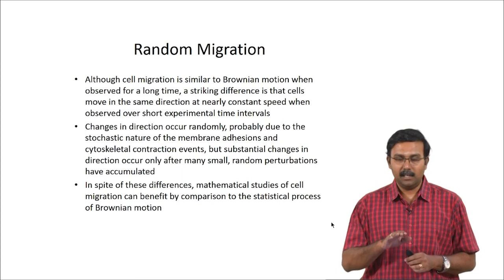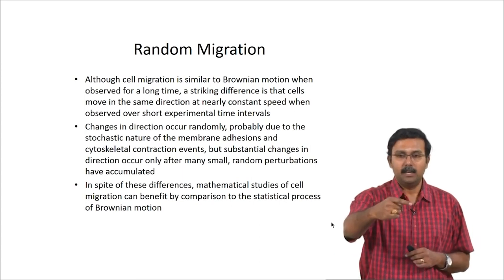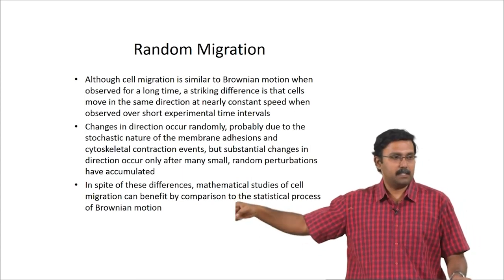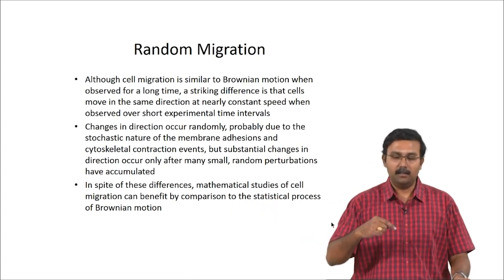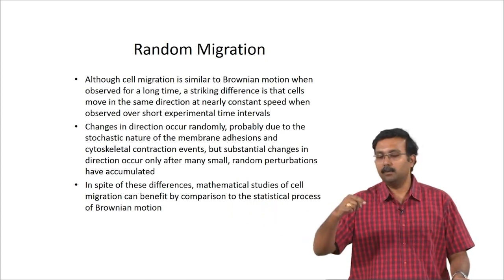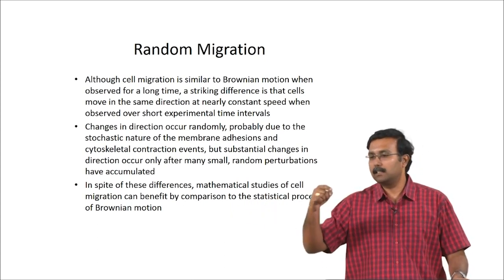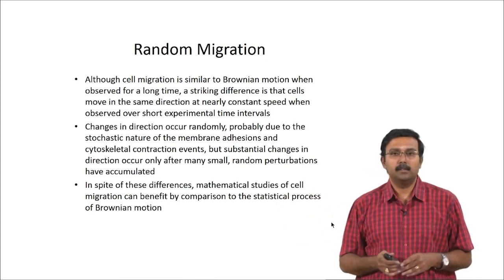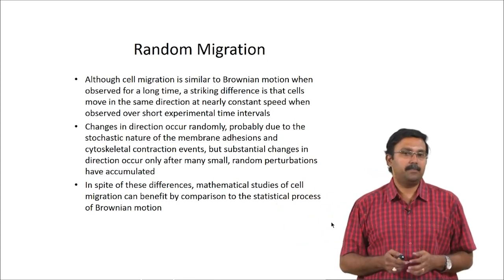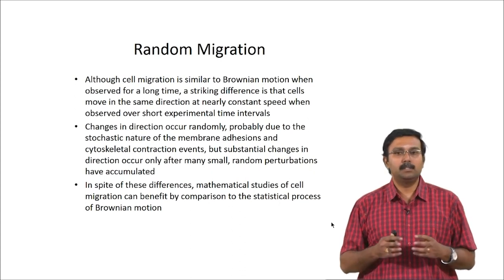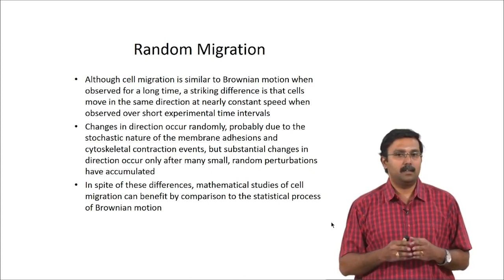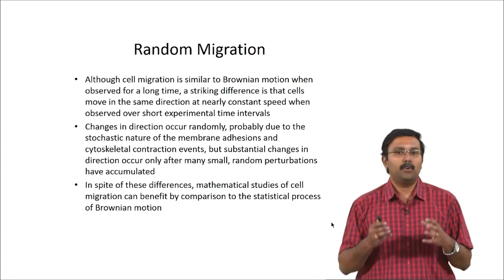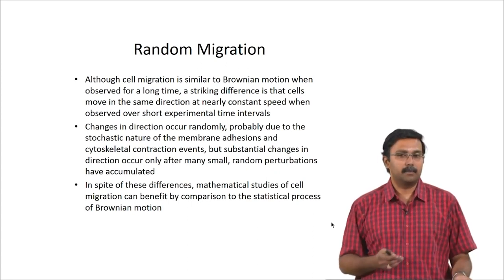The change in direction can occur randomly — this is completely stochastic in nature and depends on membrane adhesions and cytoskeletal contraction events. Substantial changes in direction occur only after small random perturbations have been accumulated — it is not like a cell moving one way suddenly changes direction; it moves slightly to another site, then another, before it completely changes direction. In spite of these differences, you can use mathematical studies based on Brownian motion for understanding cell migration.